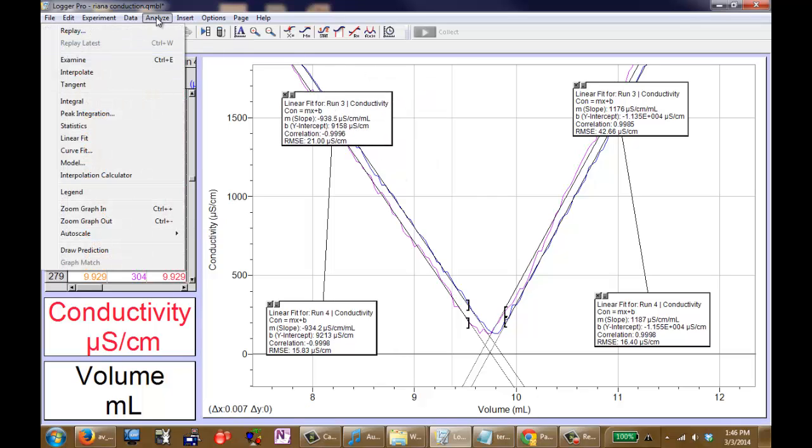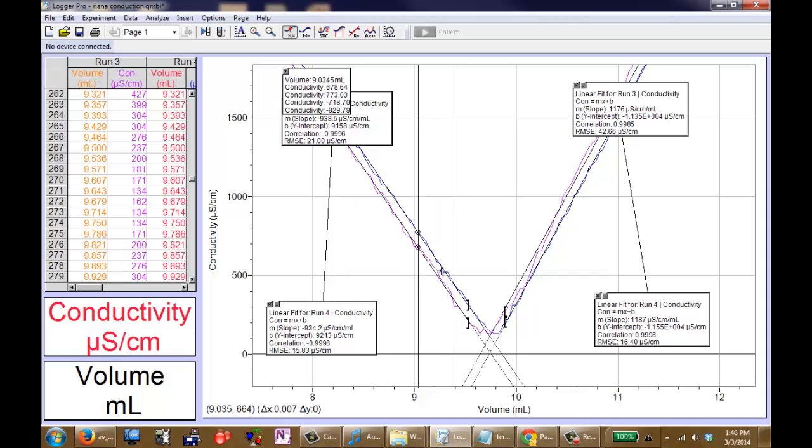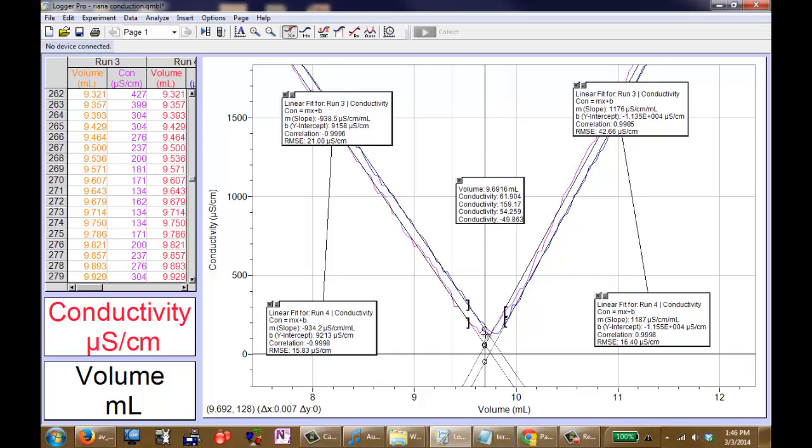We'll use the analyze interpolate feature on Logger Pro. We can see that the first point of equivalence is right here at 9.6916 or 9.692 milliliters.